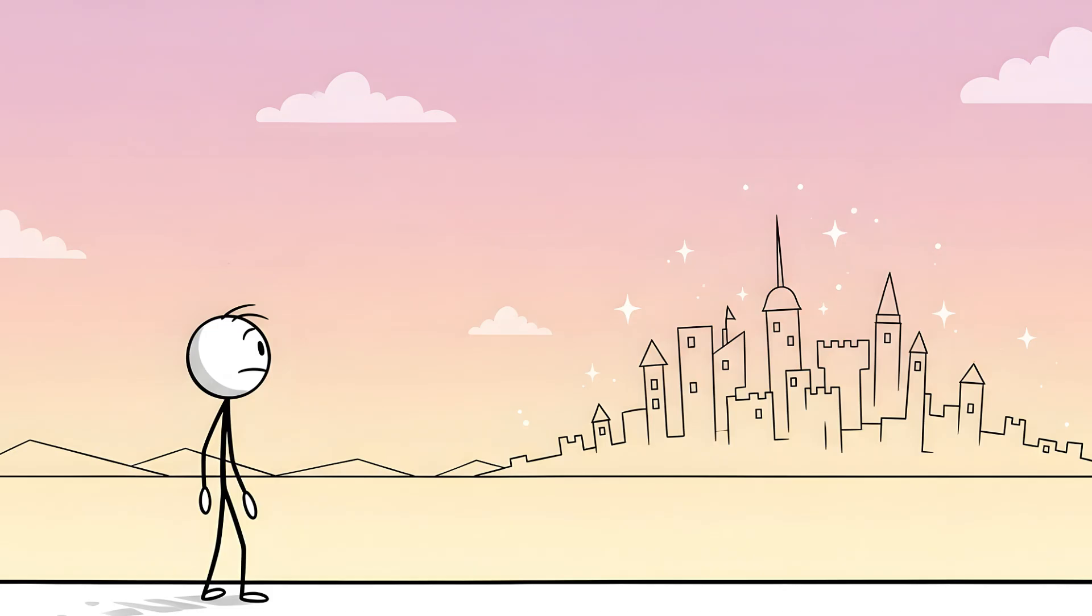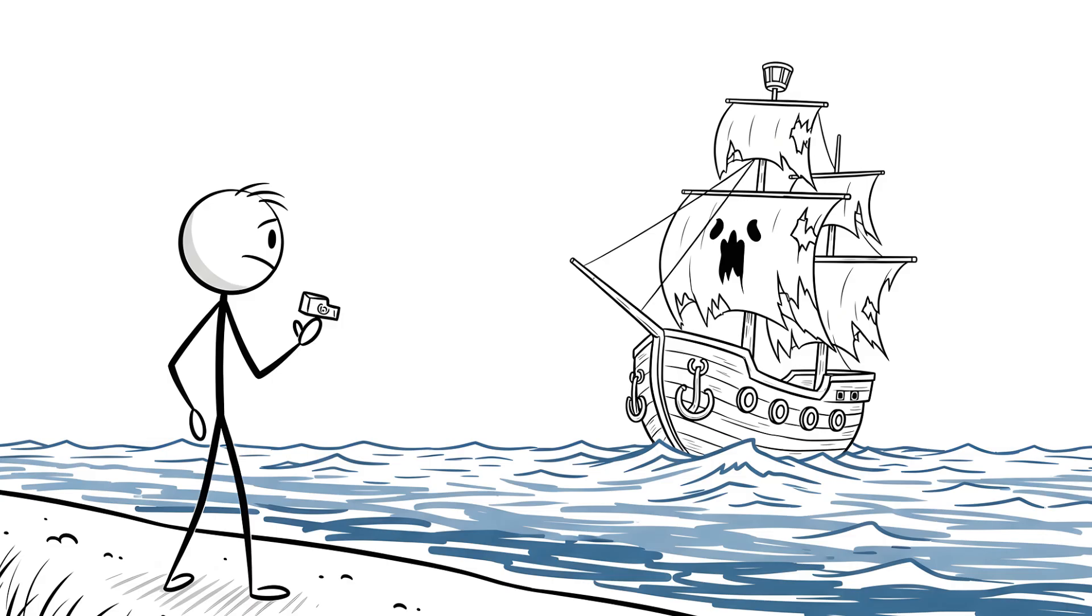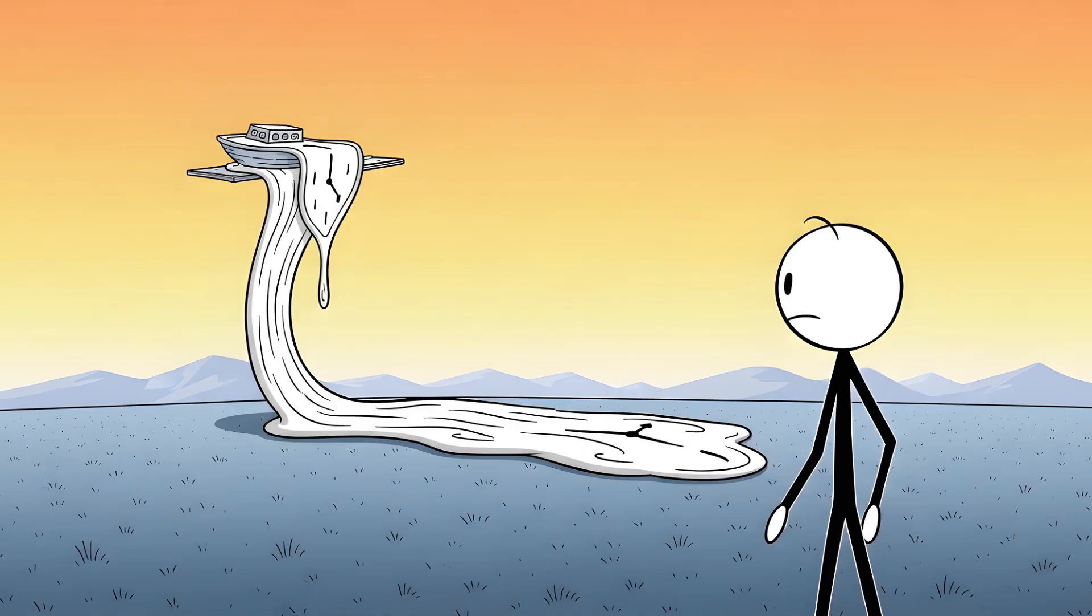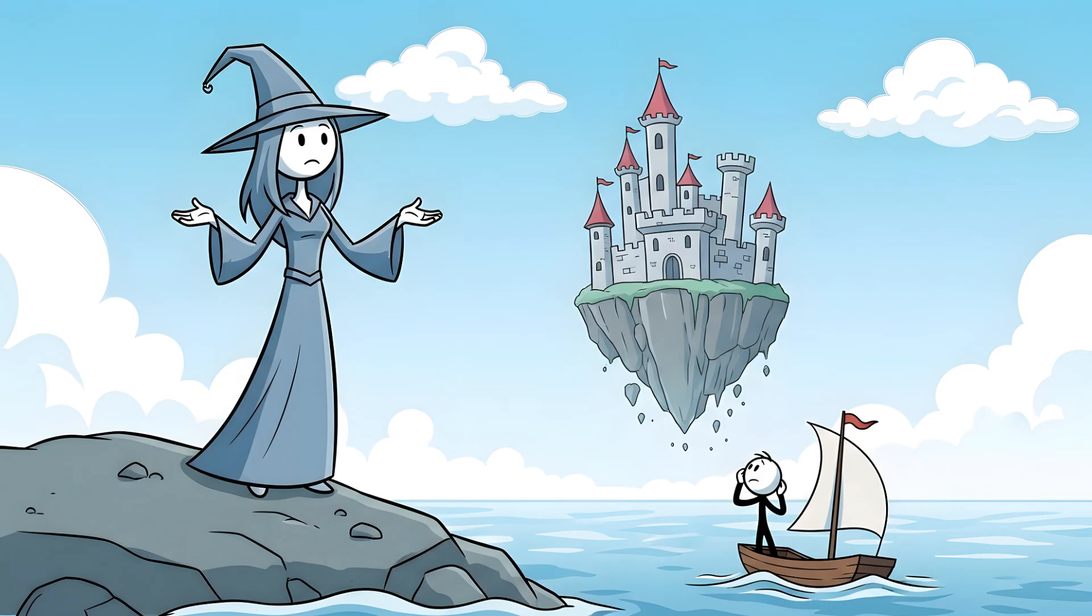Number two, the Fata Morgana. You're staring out at the sea or across a desert and you see it. A city. A detailed, shimmering skyline of towers and castles, floating impossibly in the air just above the horizon. It looks solid. It looks real. You are looking at the legendary ghost ship, the Flying Dutchman, or a lost city of Atlantis rising from the waves. This is a Fata Morgana, the mother of all mirages. It's not your standard puddle-on-the-road mirage. This is a complex, superior mirage that takes reality and turns it into a Salvador Dali painting. The name comes from the sorceress Morgan Le Fay of Arthurian legend, who was said to conjure phantom castles in the sky to lure sailors to their doom. And honestly, that's not far off from how it feels.